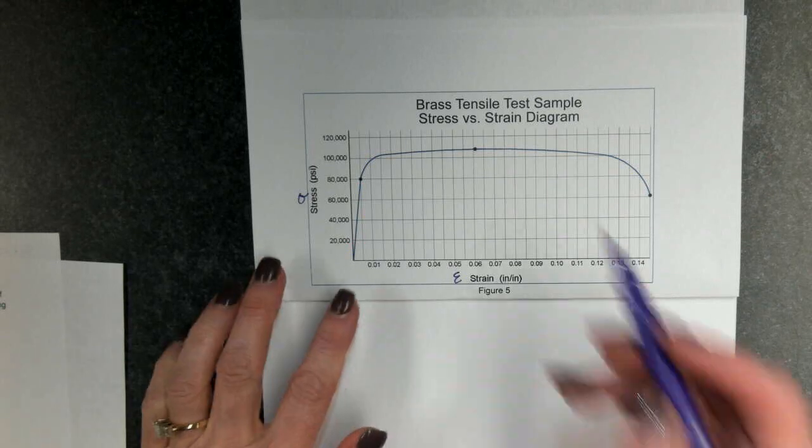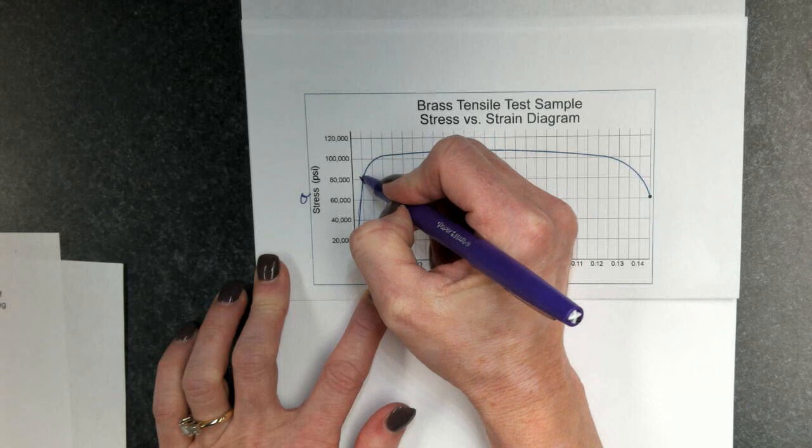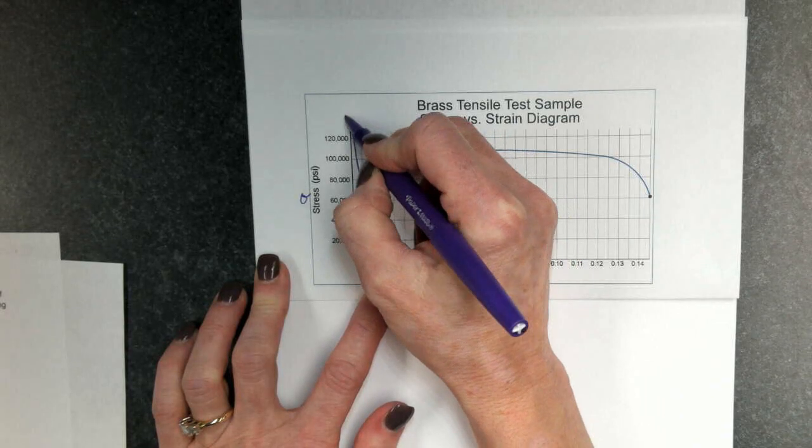Number one is the proportional limit. Right here at the end of the linear part of your graph is the proportional limit.